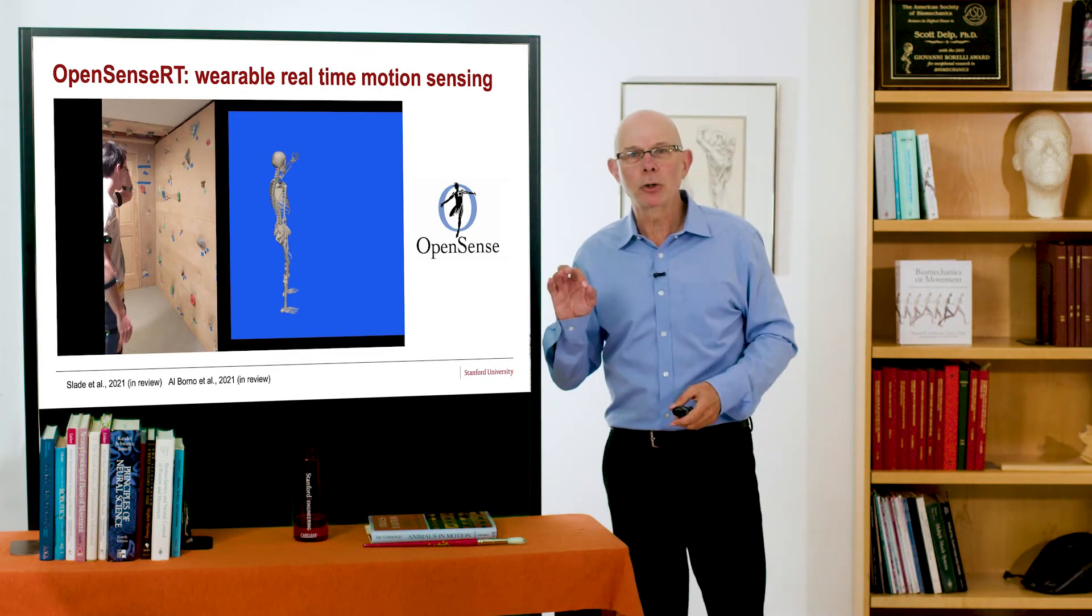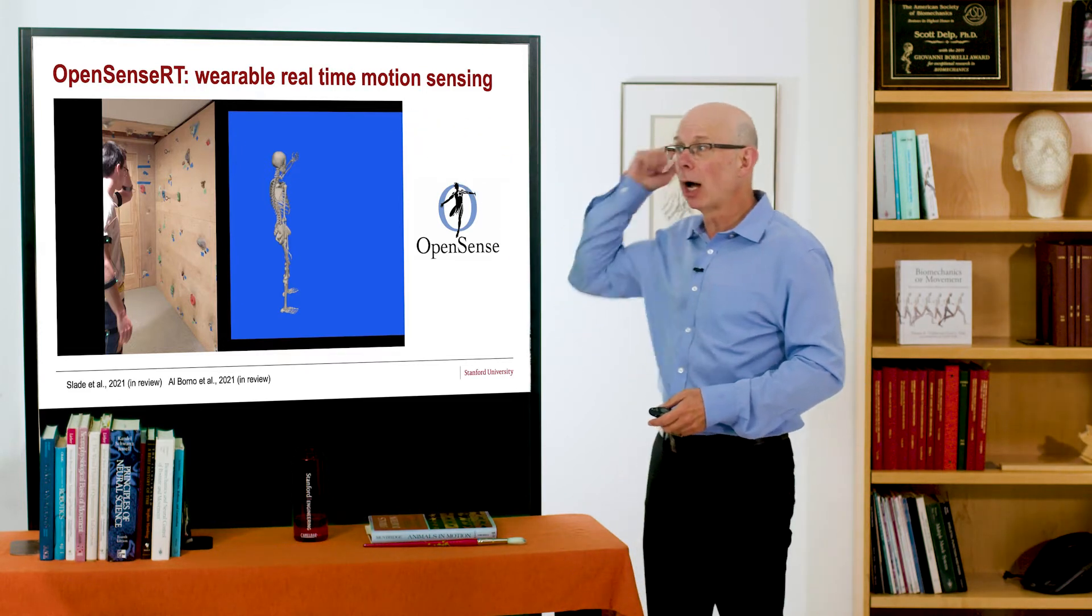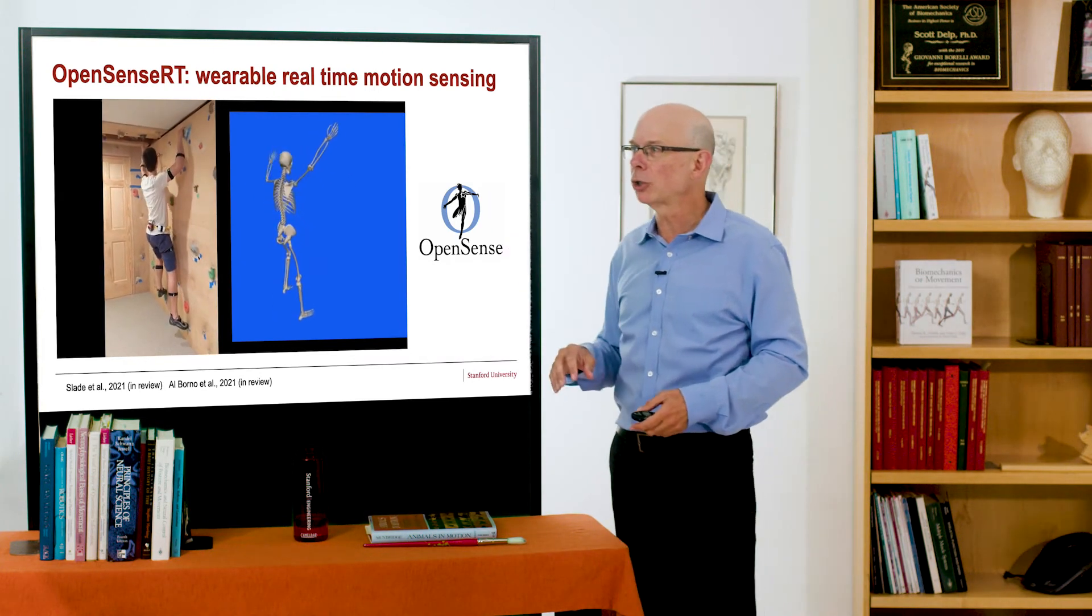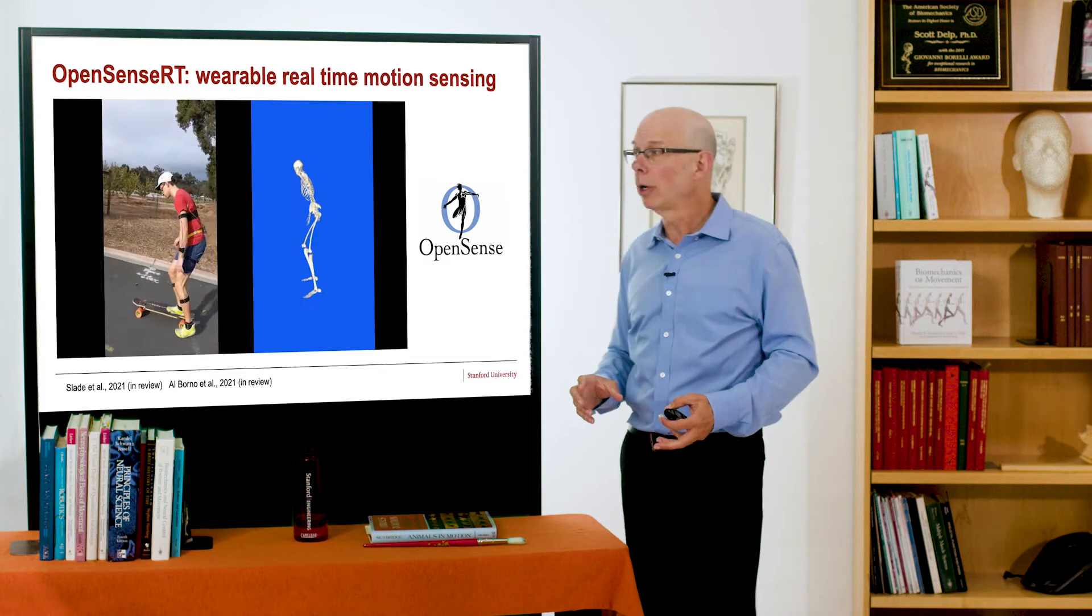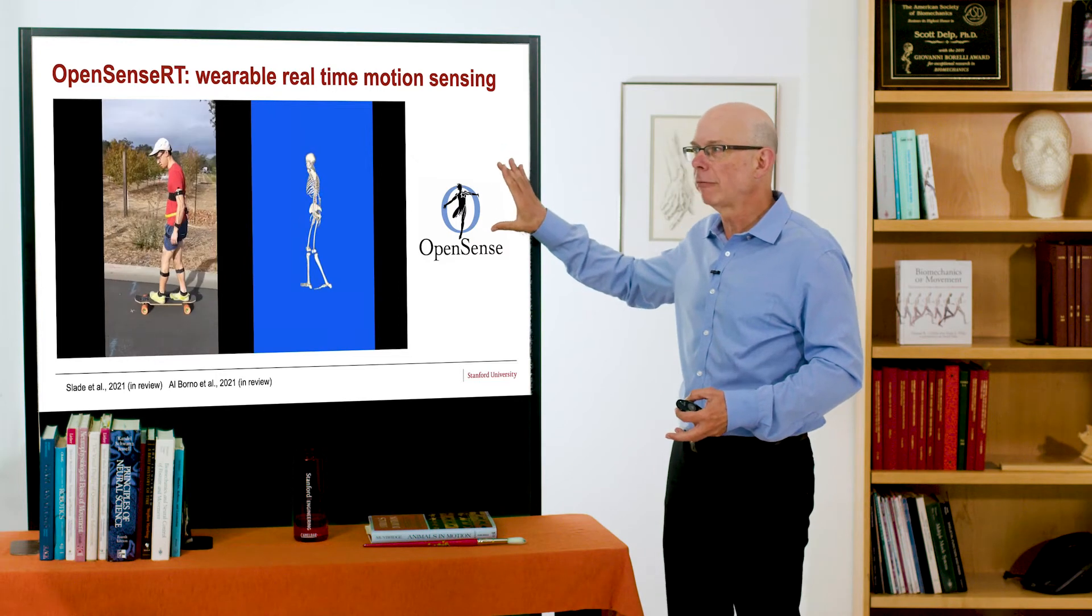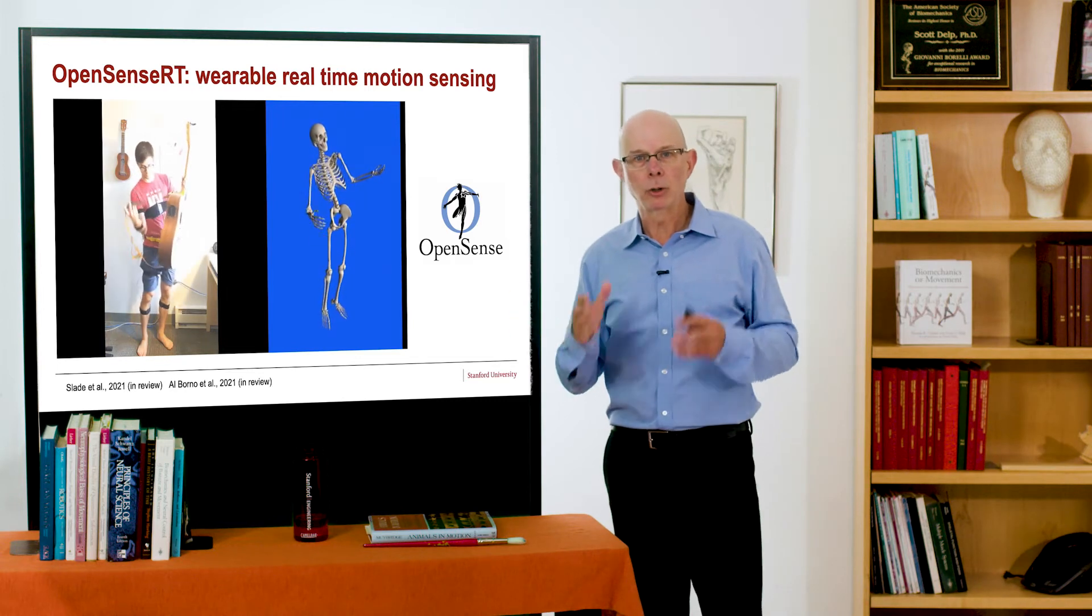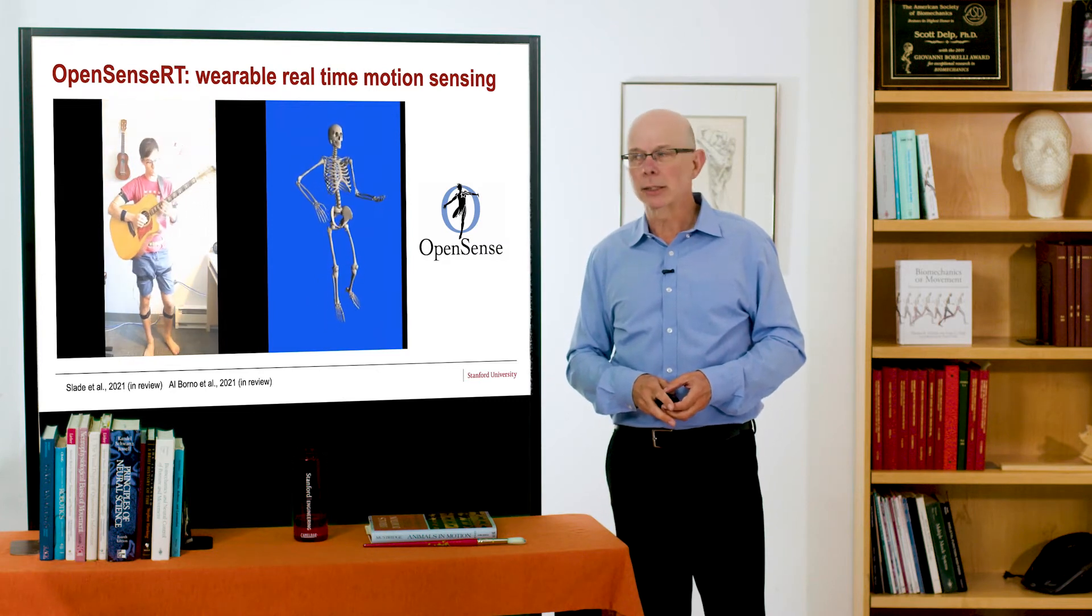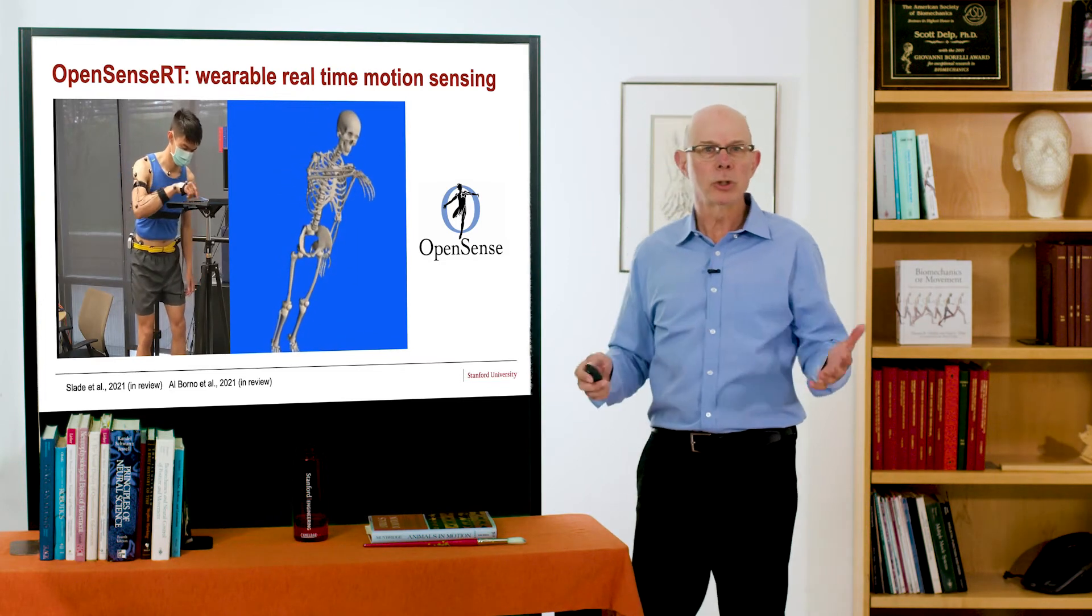So what's next? There are two very recent developments. The first is called OpenSense, and OpenSense Real-Time. This is wearable real-time motion sensing. Pat Slade, who led the development, is shown here skateboarding down the street. And we can take OpenSim models, run it on the wearable computer, and get real-time kinematics for a wide variety of motions. This is freely available in the OpenSense and OpenSim software. It's cheap to build. It's about a hundred bucks plus twenty dollars times the number of segments to be tracked. It has OpenSim running on the Raspberry Pi, this little wearable computer, and it's all open source and freely available.